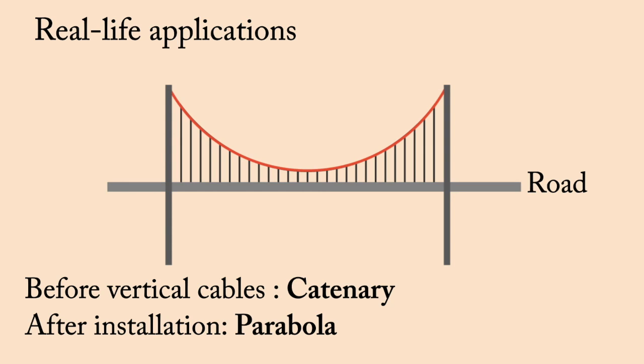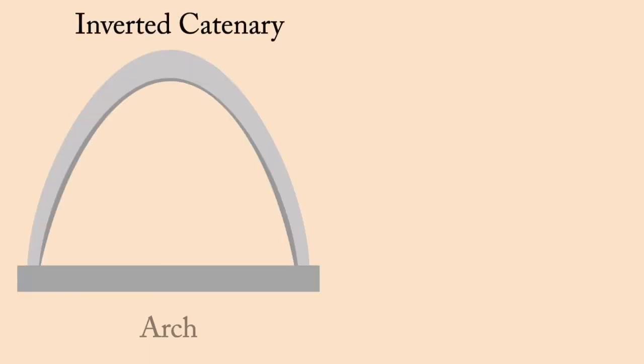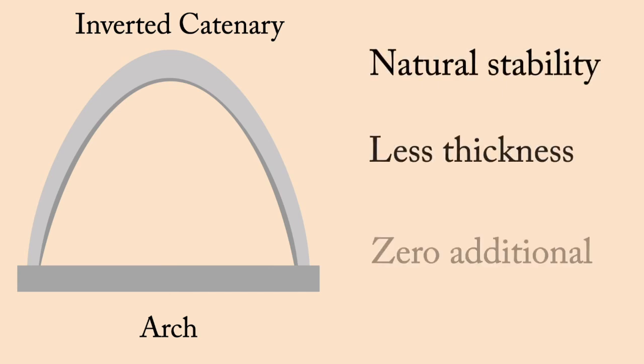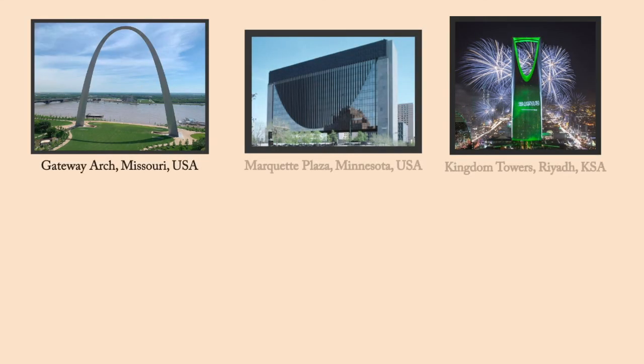Engineers use this trick regularly to construct suspension bridges. Architects use inverted catenary curves in the shape of arches because it reduces compressive forces and results in a natural stable structure. Due to their extreme stability, their thickness can be reduced and no additional weight is required. Some examples of catenary arches are the Gateway Arch, the Market Plaza, the Kingdom Towers, etc.